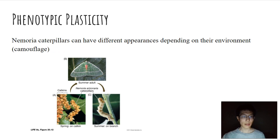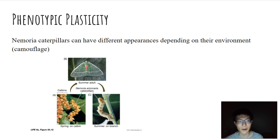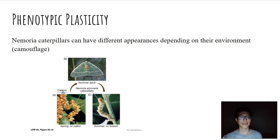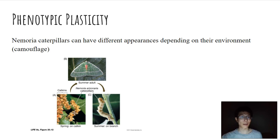Another example is with a group of Lepidopterans — a Nemoria caterpillar — which can actually have different appearances depending on their environment. During the spring, caterpillars actually look very similar to the catkins of the trees or plants they're feeding on. But in summer, the caterpillars are hanging out on the branches — the catkins are no longer there — so being catkin-like would make them very conspicuous. Instead, they look slightly different and match the branch. So depending on the season, the caterpillars can look different for camouflage purposes.